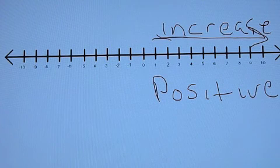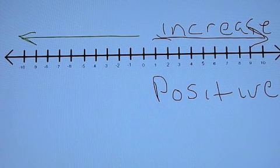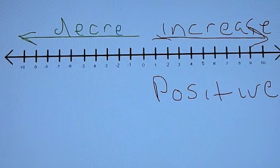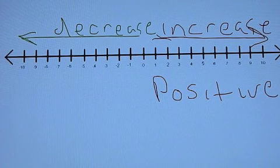Now to the left of zero, any number to the left of zero, as we go to the left of zero, the numbers will decrease in value. Meaning they will get smaller. And we call those numbers negative.